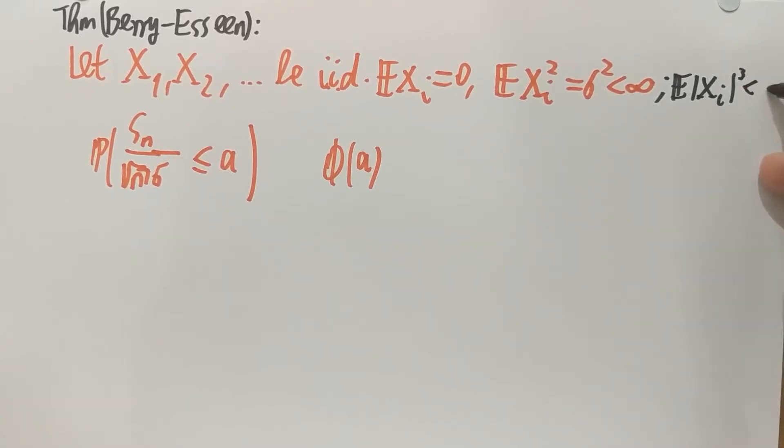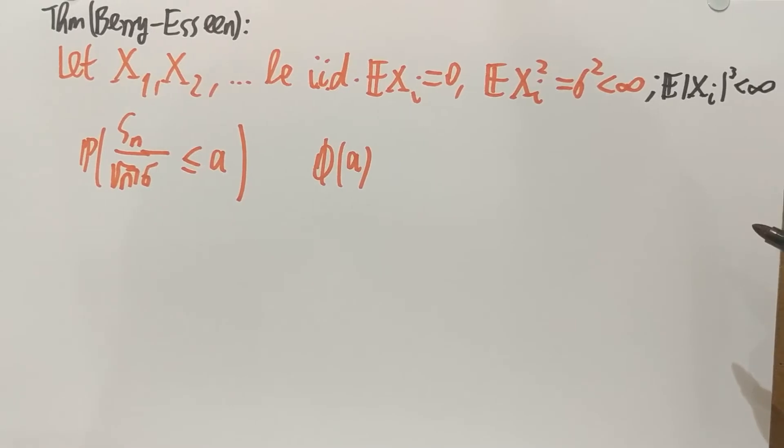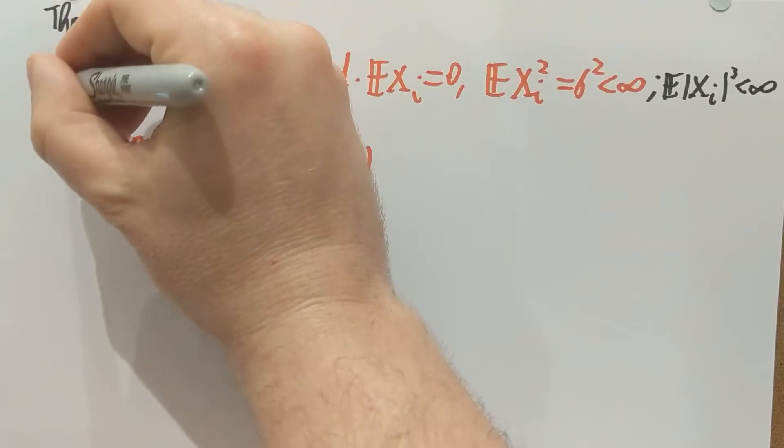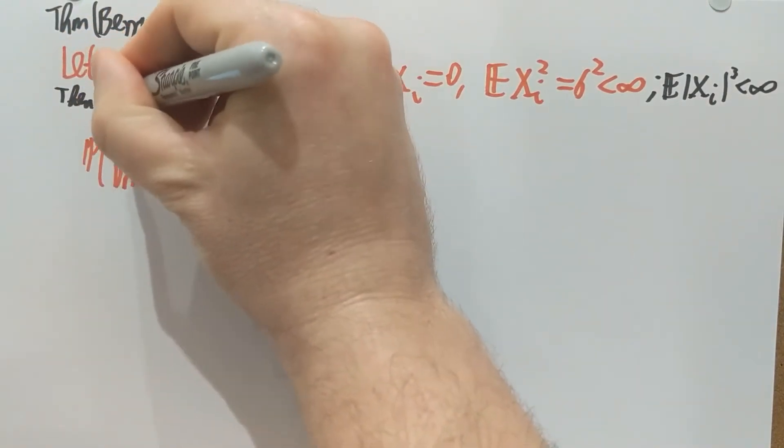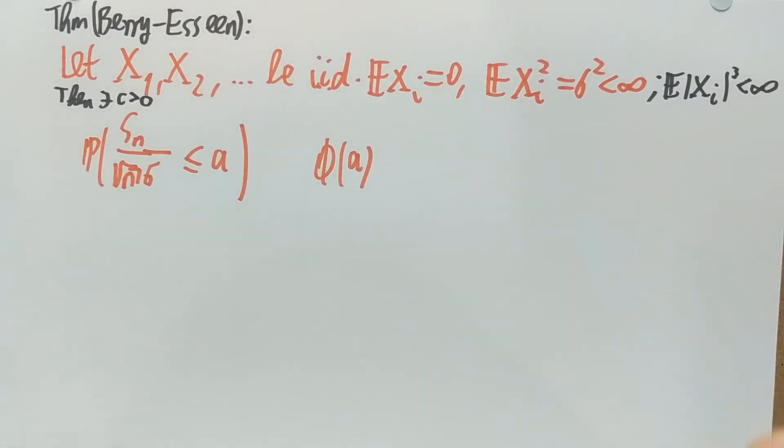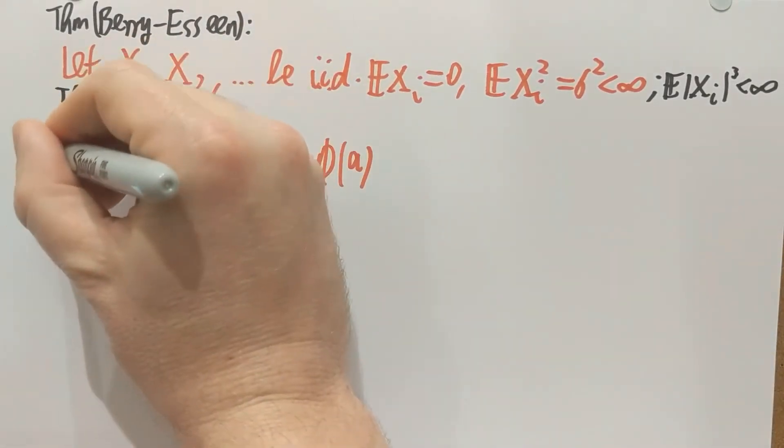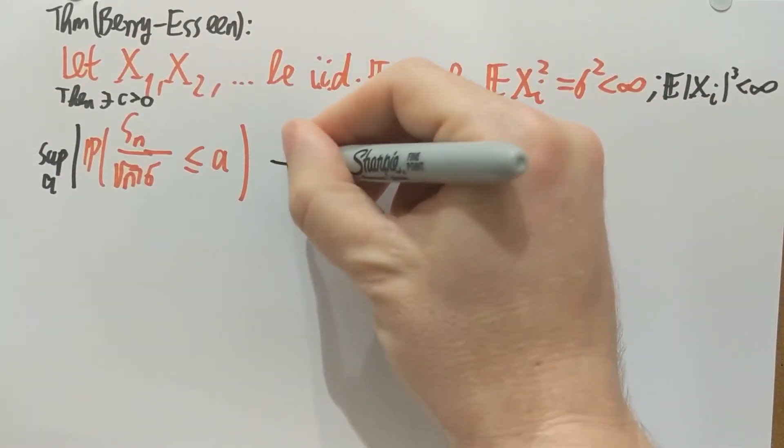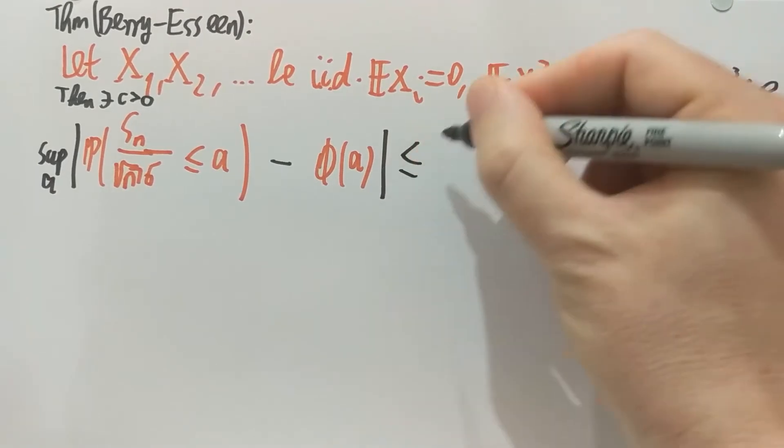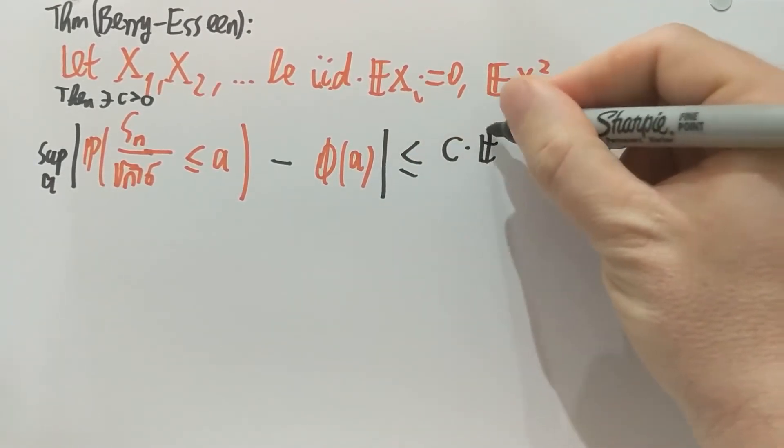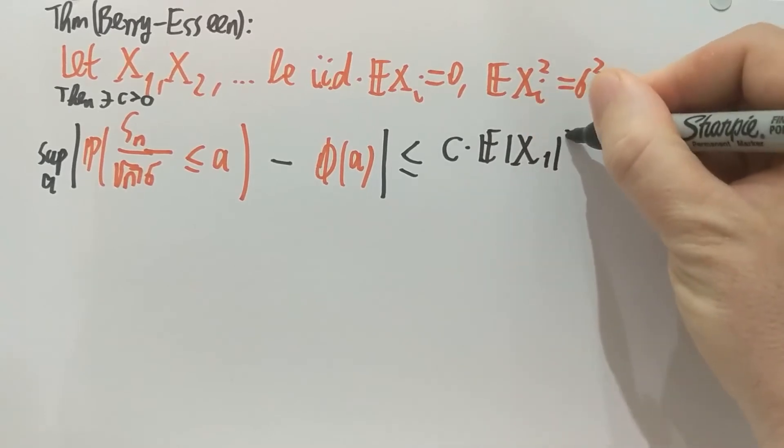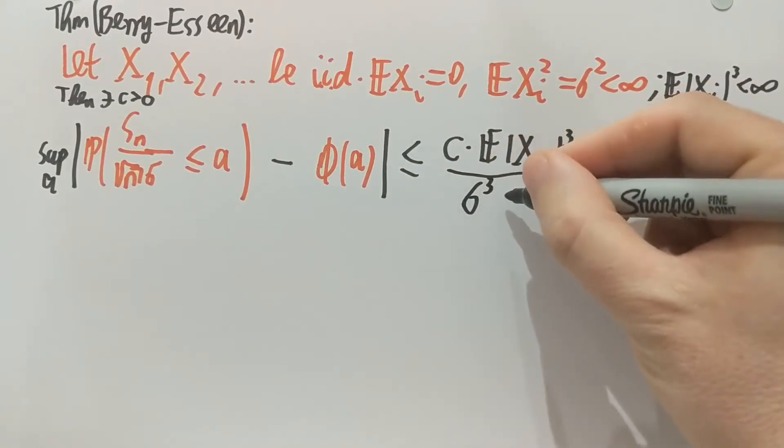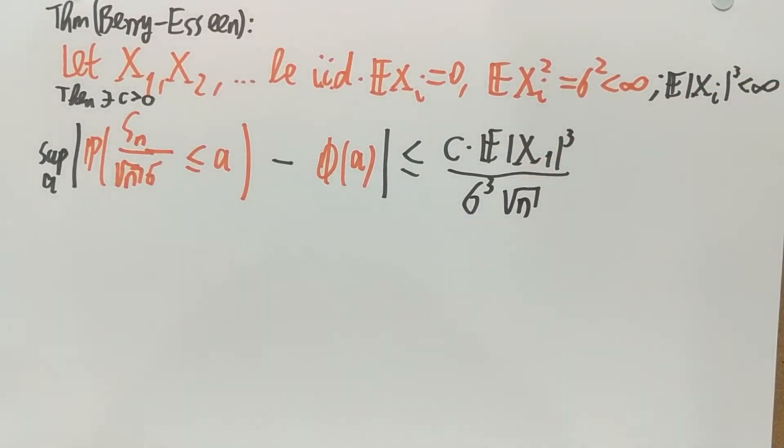So E of X cube is also finite. The theorem says that then there exists a constant, which doesn't depend on anything, it's just an absolute constant, such that no matter what the distribution is, no matter what a is, the difference between these quantities is bounded in terms of the third moment of the Xᵢ's, and you have to divide by standard deviation cubed and the square root of n. So that's the Berry-Esseen theorem.